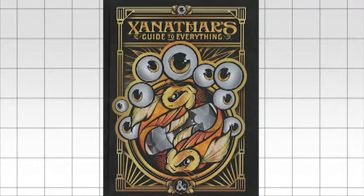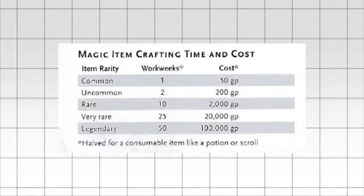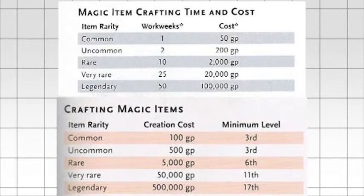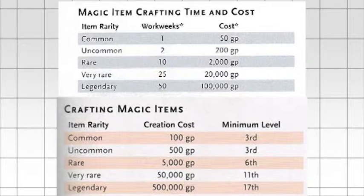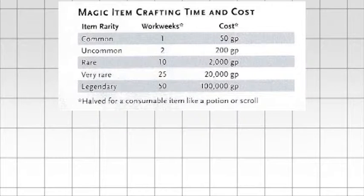But in Xanathar's guide, they made another table for magic items, which is a little bit better. It kind of has the same table that's in the DMs guide, but it also adds the work weeks, which you could have calculated in the other one, but this one's better and easier. The cost, as you can see, is lessened, which is way smarter because it makes way more sense that it would cost 200 to make it uncommon and then you could sell it for a profit. I mean, how else do people make money making magic items? This table makes a lot more sense to me.